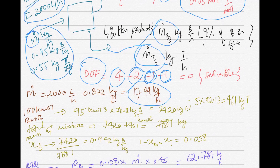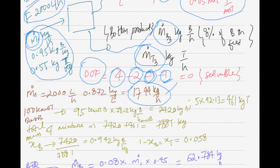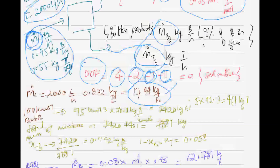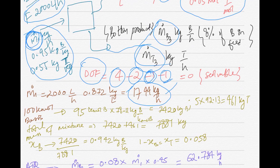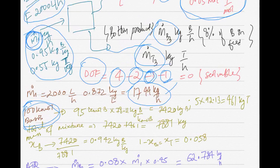Since m1-dot is 2,000 liters per hour, multiplying the volumetric flow rate by density (from specific gravity) gives us the mass flow rate. After that, since the top product composition is given in mole fractions, we need to convert it to mass fractions, because the feed and bottom product are both in mass fractions. It would be relatively easy to work in kg per hour, so we need to convert the mole fractions into mass fractions.